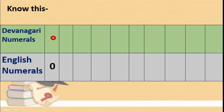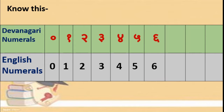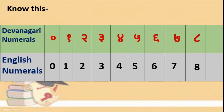Sunya, 0, 1, 2, 3, 4, 5, 6, 7, 8, 7, 8 — showing the Devanagari numerals alongside their English equivalents from zero through nine.